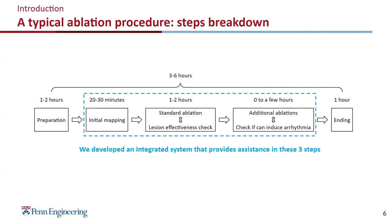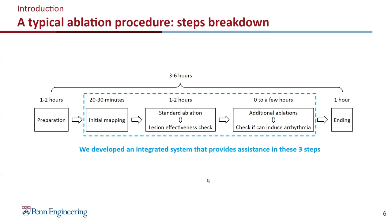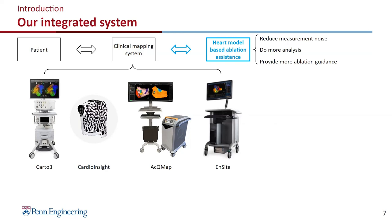We developed an integrated system that provides assistance in these three steps. There are many companies making different types of mapping systems — four different types shown here, all similar. What they do is take measurements from the left atrium and interpolate them into the atrium geometry and display it as a color map. What we add is that we integrate the heart model to this system. The advantage is we can reduce measurement noise, do more analysis, and provide more ablation assistance with our heart model.